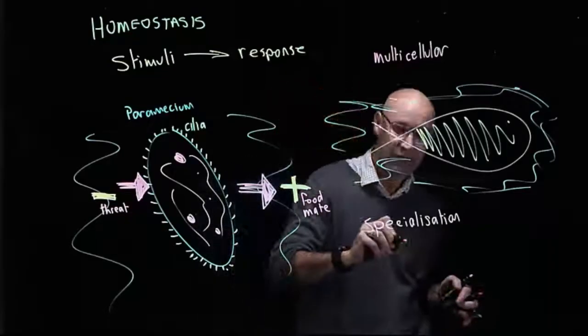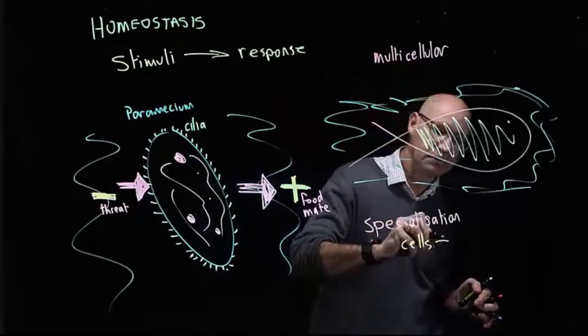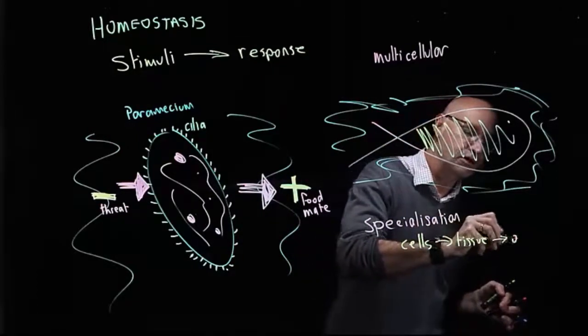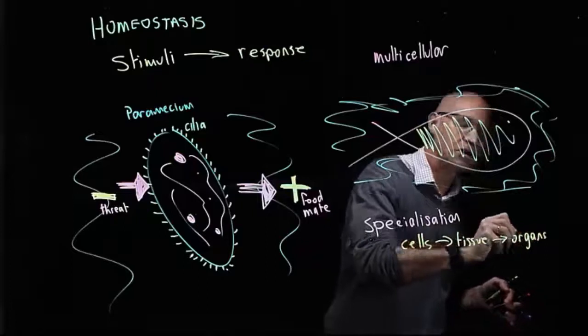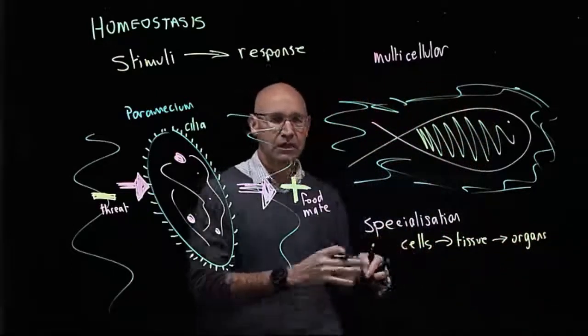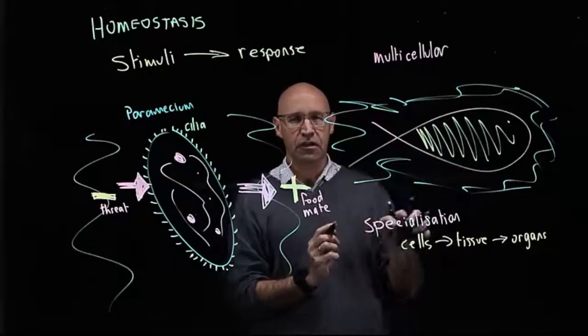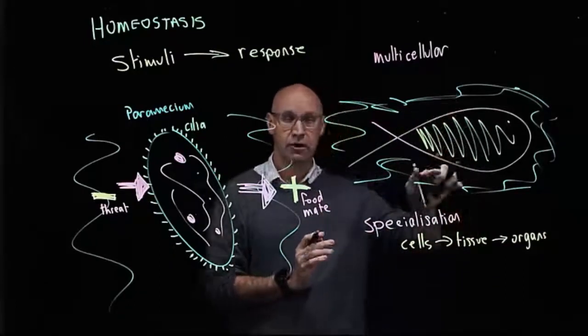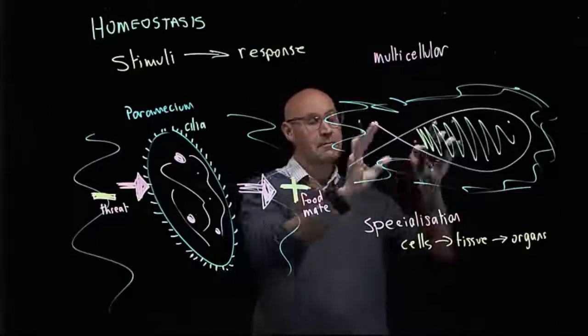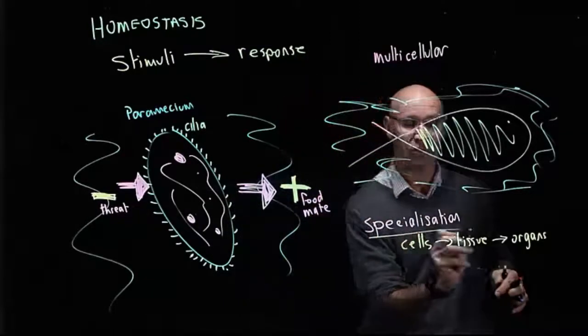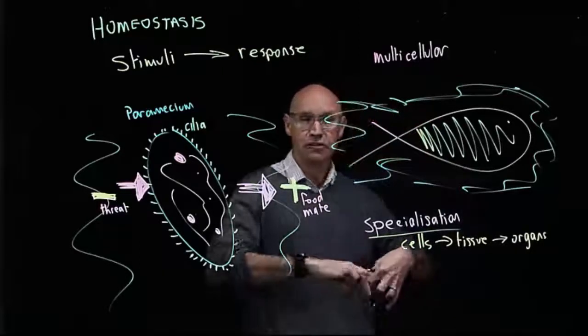Specialized tissue. So we have cells that form tissue, and the tissue forms organs—specialized organs with specialized functions and specialized ways of being able to respond to stimuli. The way that a multicellular organism is able to maintain a constant environment is because of specialization, but also because of communication.